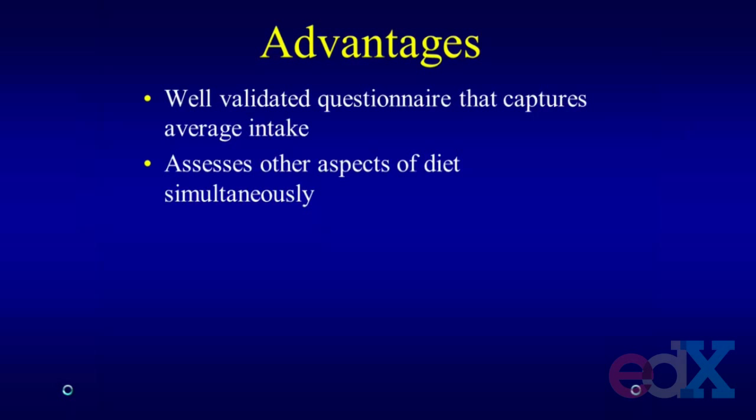Another advantage is that the alcohol questions are embedded within the total dietary assessment. Some studies looking at alcohol and diabetes may ask about body weight, smoking, and exercise, and then have a few questions on alcohol. But diet is such an important aspect of risk factors for diabetes that we thought it was important to incorporate alcohol within the overall assessment of diet, so you could simultaneously account for individuals' differences in diet with respect to their alcohol consumption. If people's diets change and their alcohol changes, you want to be able to capture that simultaneously.